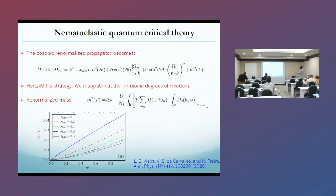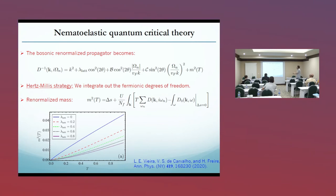We are going to use the Hertz-Millis strategy. We are going to integrate out the fermionic degrees of freedom to derive an effective theory for the bosons. Once we do that, we can calculate the renormalized bosonic mass, which is this self-consistent equation, and we can calculate this both analytically and numerically.